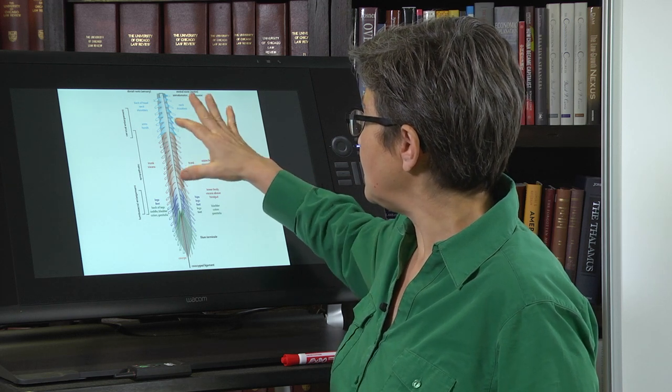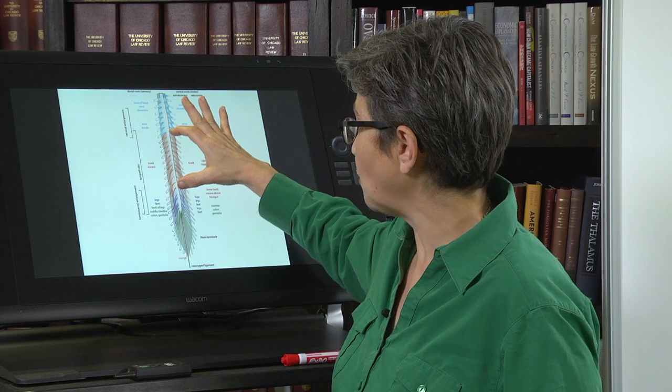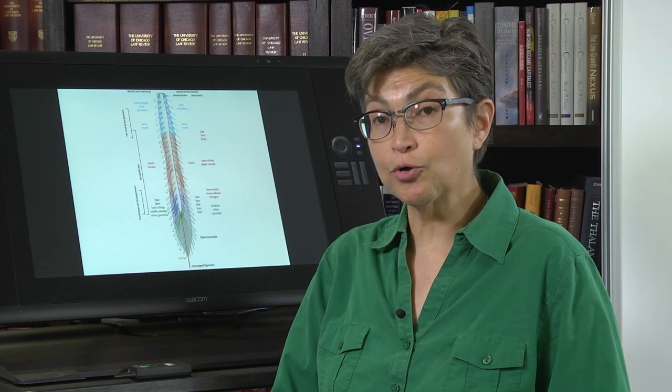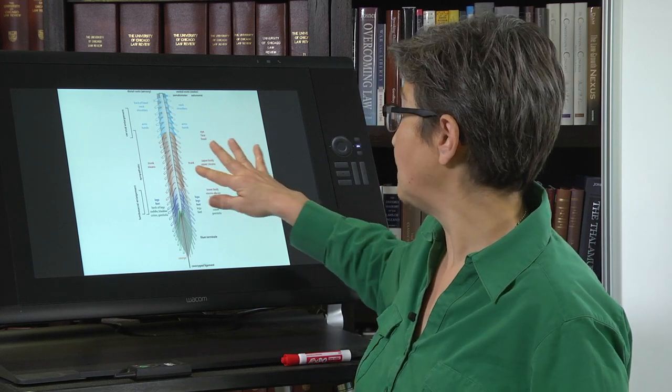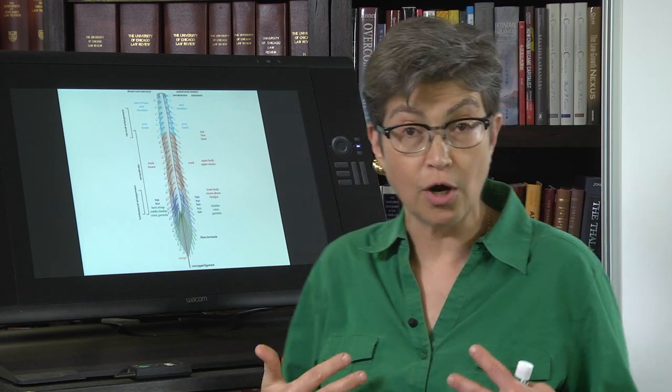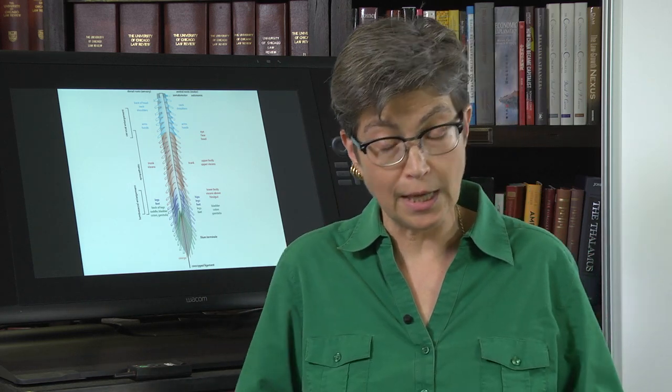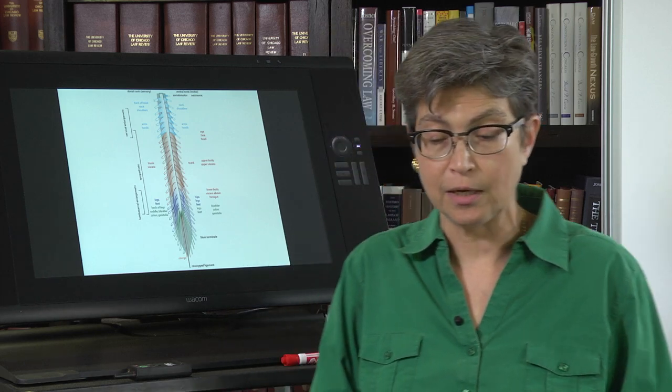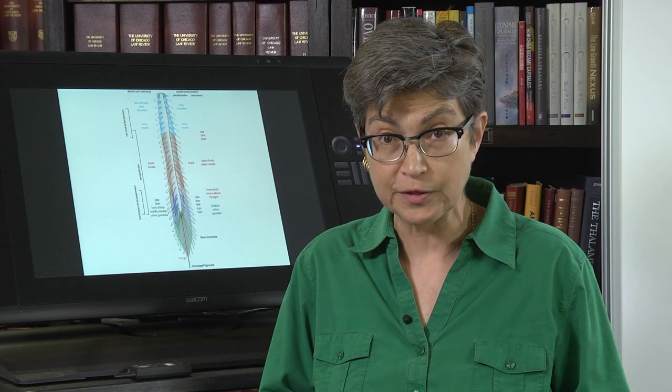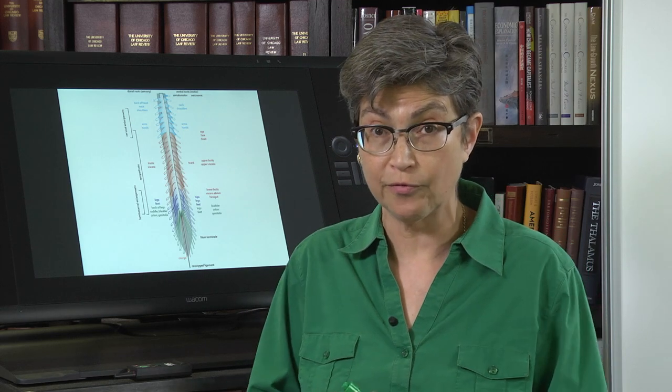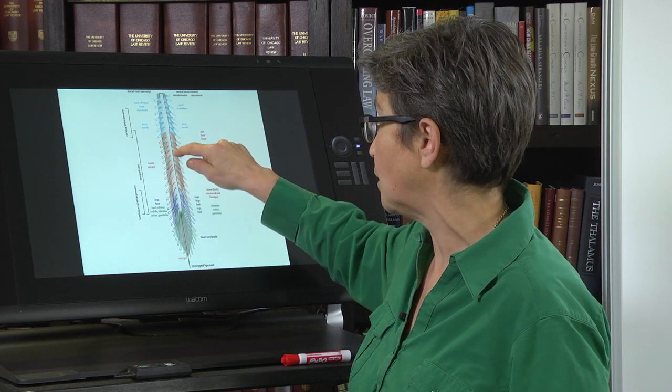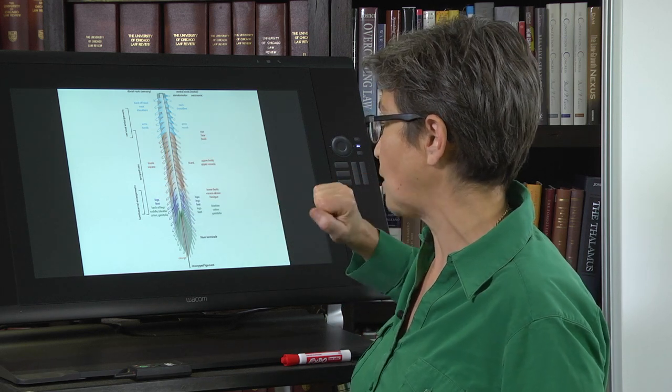From a thoracic spinal cord, there's motor out to the trunk muscles, and there is sensory information coming from the trunk, but also from the internal viscera. We get information from the viscera. Sometimes we're very aware of it, sometimes we're completely unaware of it. But in any case, sensory information comes in from the viscera and comes into the thoracic spinal cord.